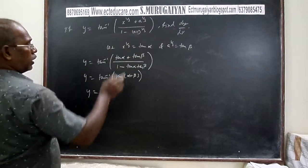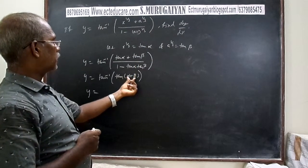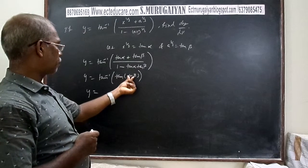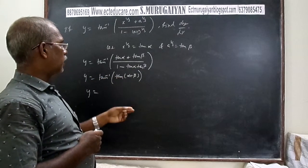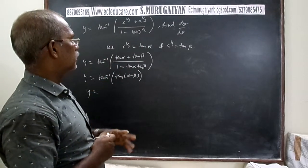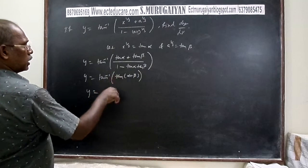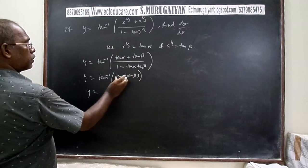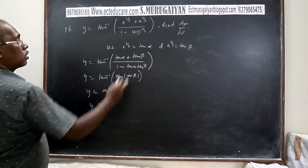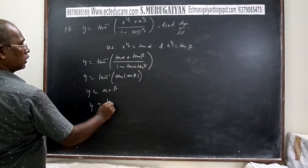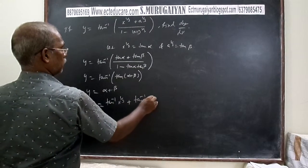Since no special domain is given, we need not test whether α + β belongs to the principal domain. We can directly cancel tan⁻¹ and tan to get y = α + β = tan⁻¹(x^(1/3)) + tan⁻¹(a^(1/3)).